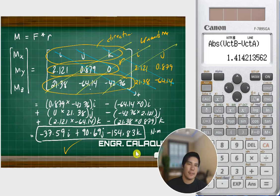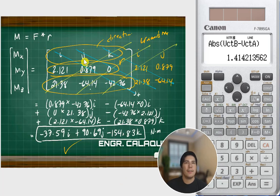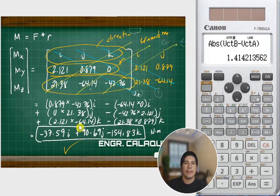The force vector is (21.38, −64.14, −42.76) corresponding to i, j, k components. Applying the basket (cofactor expansion) rule — taking products and adding with alternating signs — we simplify to get the moment vector: mx = −37.59 i, my = +90.69 j, mz = −154.83 k.